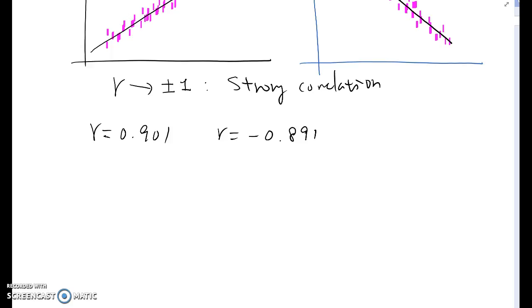So the first one is negative 0.996. Second one 0.911. So 0.911, which one shows stronger correlation? Must be this one because it is very close to absolute value one. So as I told you, if R approaches either plus or minus one, we are considering strong correlation.